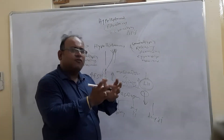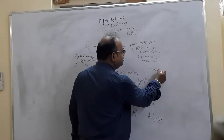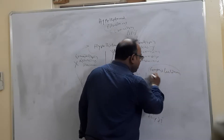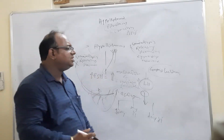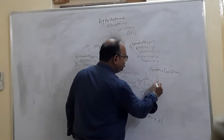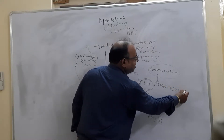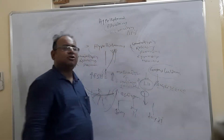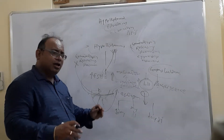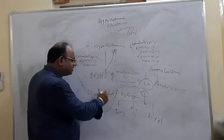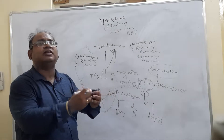Whenever there is a secretion of luteinizing hormone, the egg cell or ovum is released from the ovarian follicles. These ruptured ovarian follicles are called corpus luteum. The corpus luteum will start producing another hormone called progesterone. Progesterone helps to modify the uterine lining in such a way that it will help in the nourishment of the embryo, if fertilization takes place.